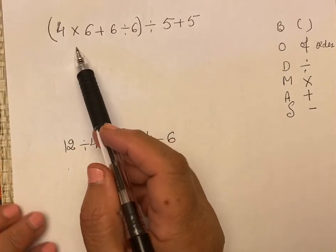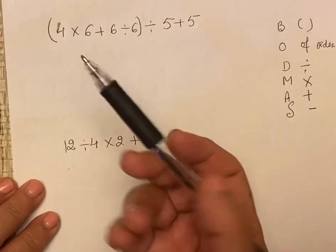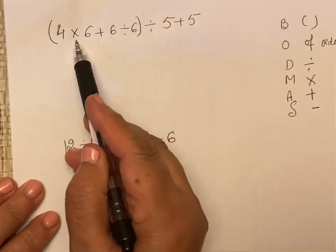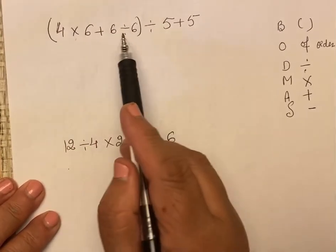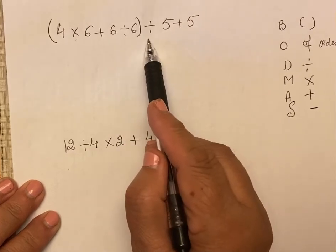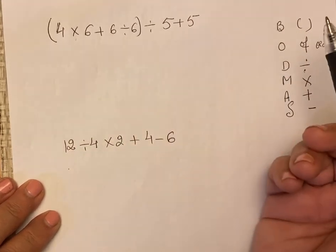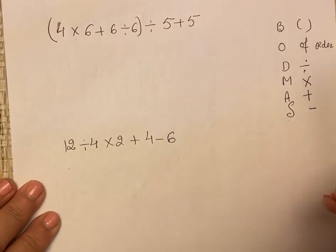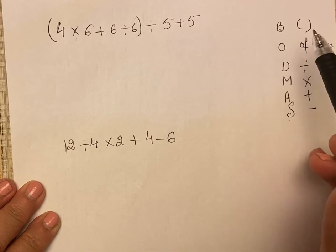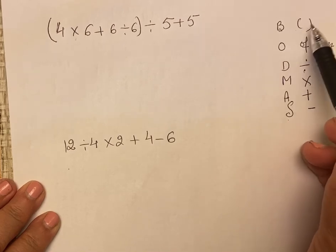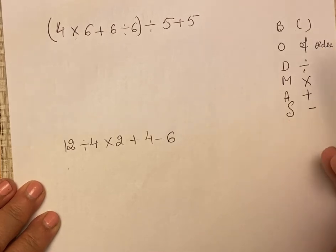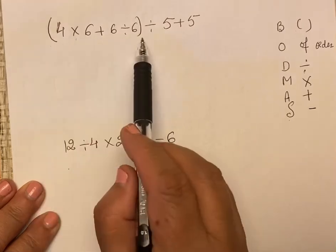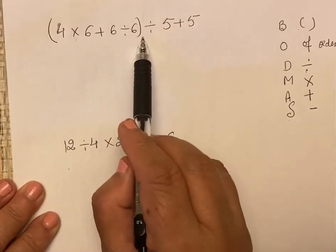We can take the case of this. There are so many signs: multiplication, addition, division, and again division, and addition. So if we follow the BODMAS, we will see which sign is given priority. First priority goes to bracket. Here is the bracket. So we will solve the bracket.